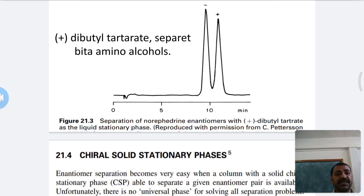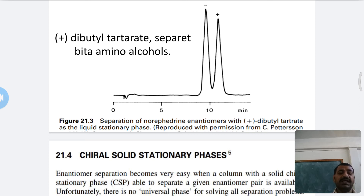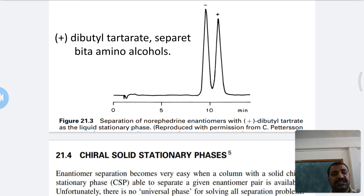This chromatogram shows the separation of norfenefrine enantiomers using dibutyltartrate as the liquid stationary phase. The enantiomers are easily separated. Dibutyltartrate is used as the liquid stationary phase for separating beta-amino alcohols, and this is an example of the chiral liquid stationary phase technique.